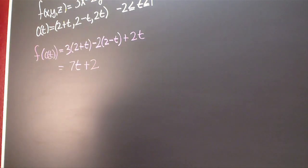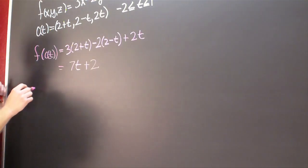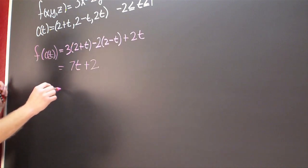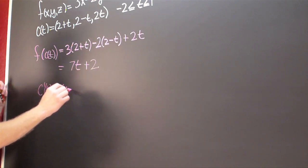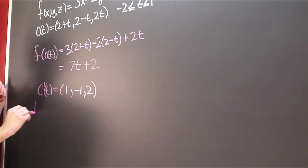Okay, so now we have our F of our parametrized curve. So we keep on keeping on. Now what we also need is C' of T. So I'm going to go ahead and take the derivative of that. That's going to be 1 minus 1 and 2.